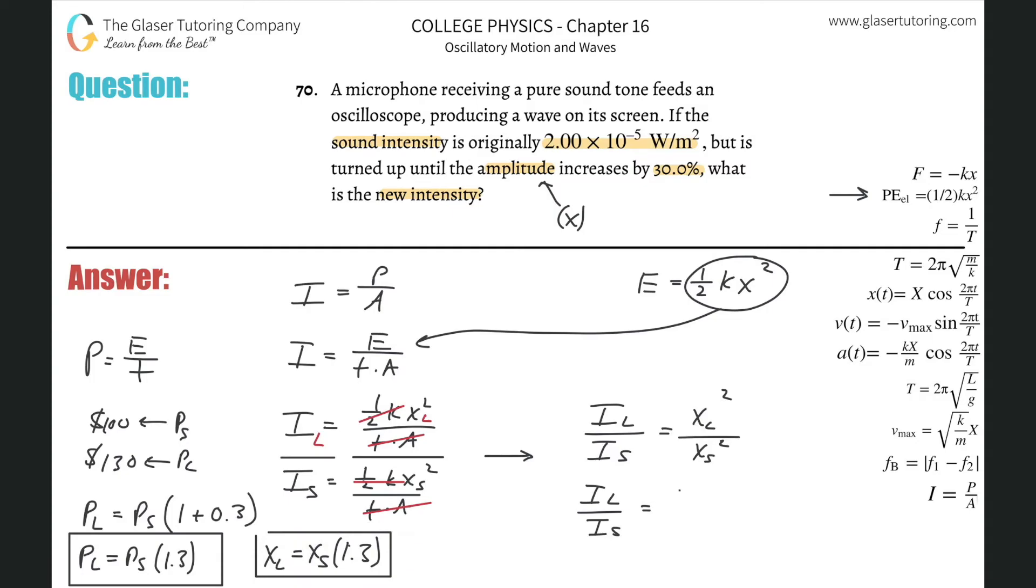This becomes the smaller amplitude times 1.3, that whole thing squared, all then divided by the small intensity squared. Now mathematically this just cancels. The small amplitude squared and this is essentially squared too because you distribute that square. So now what we have is the large intensity divided by the small intensity is basically equal to 1.3 squared.